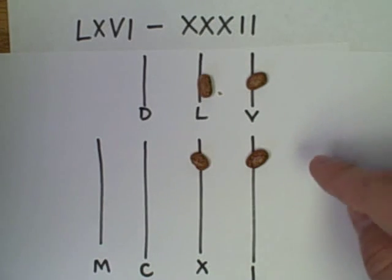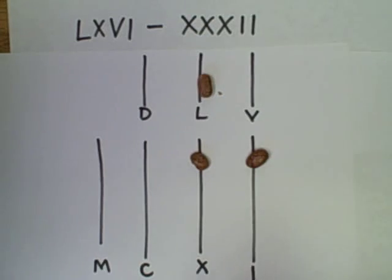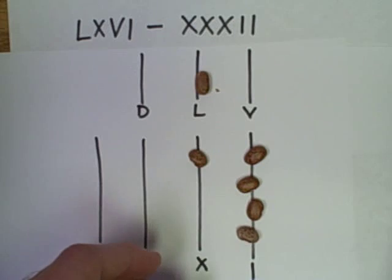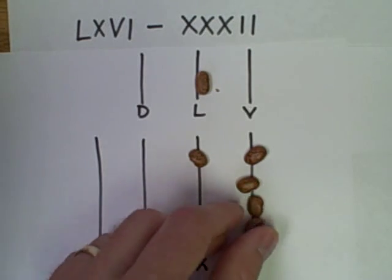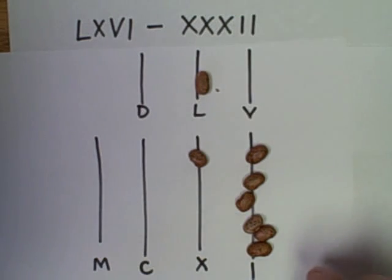To take away the two, I only have one in the I's, so I can break this five down and exchange it for five ones. And then take away two of them.